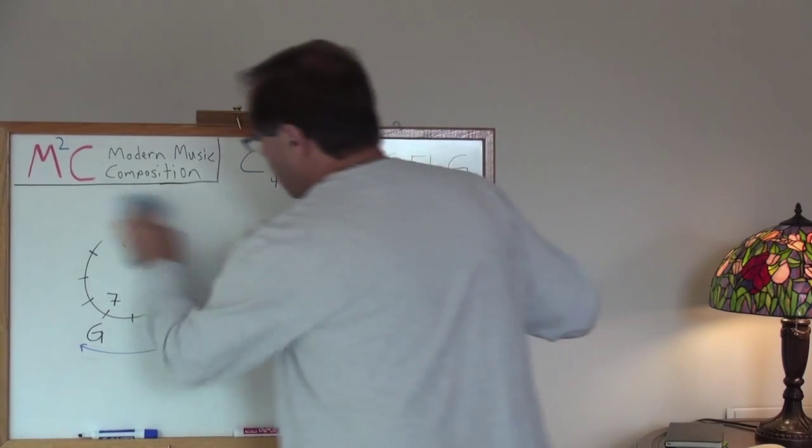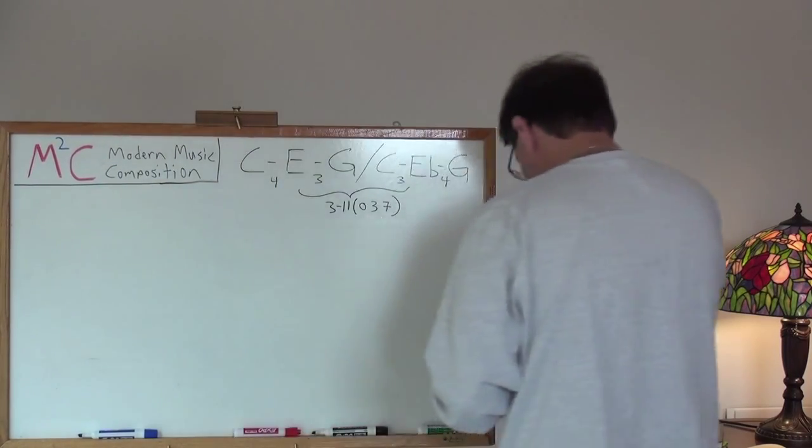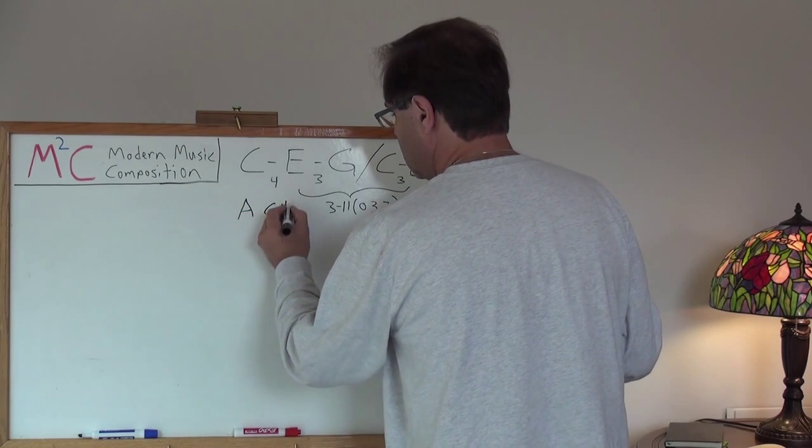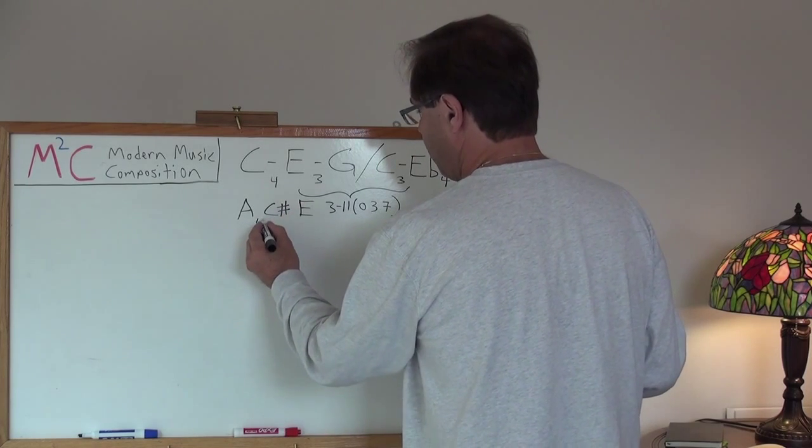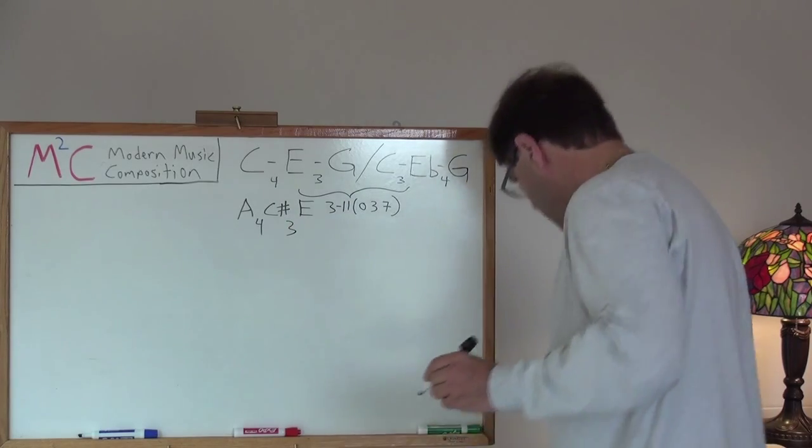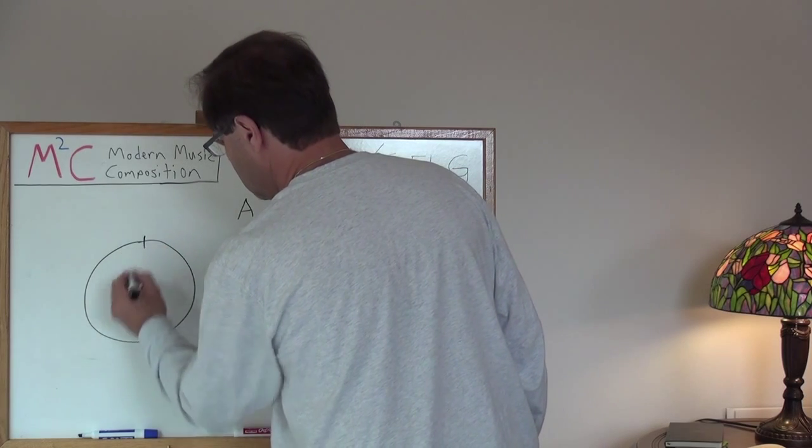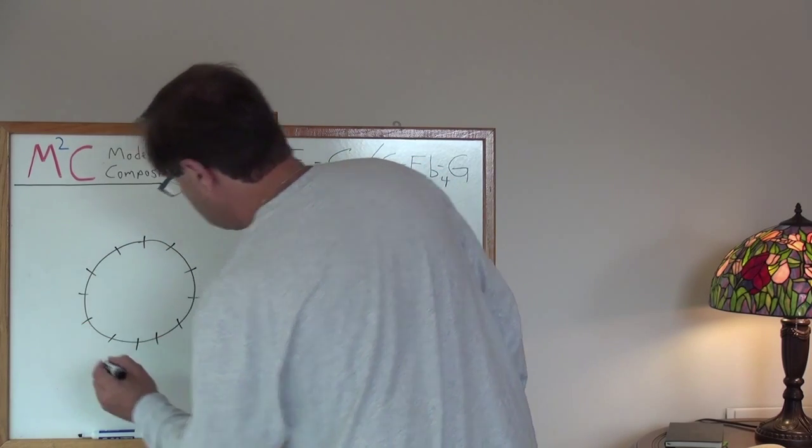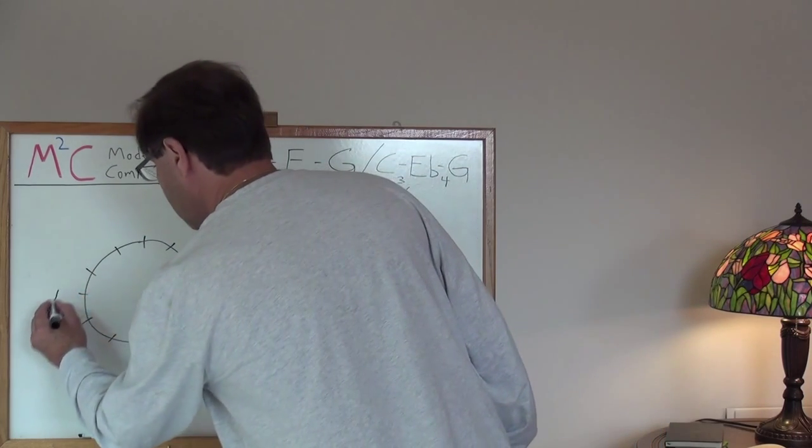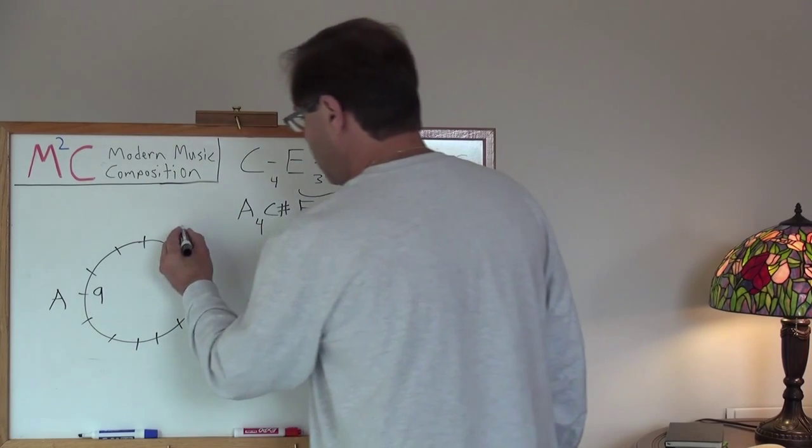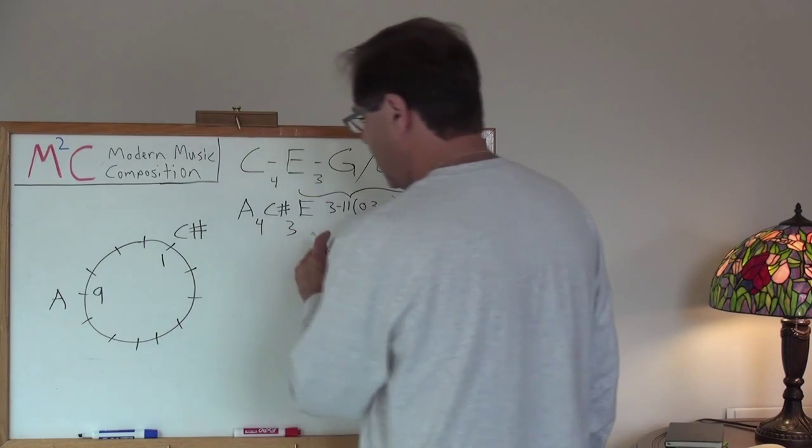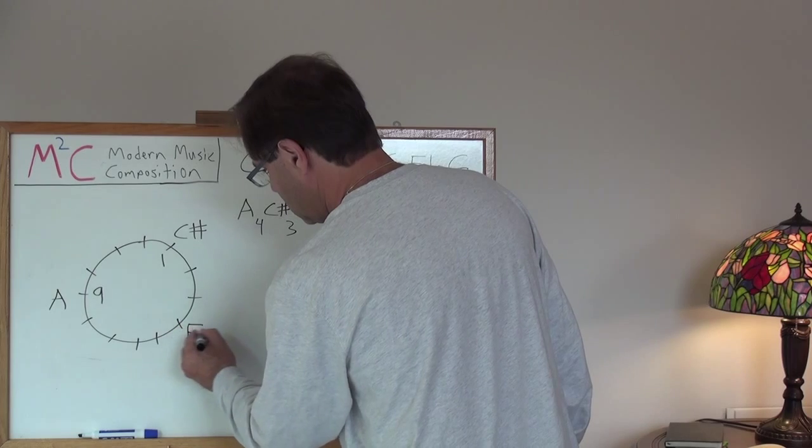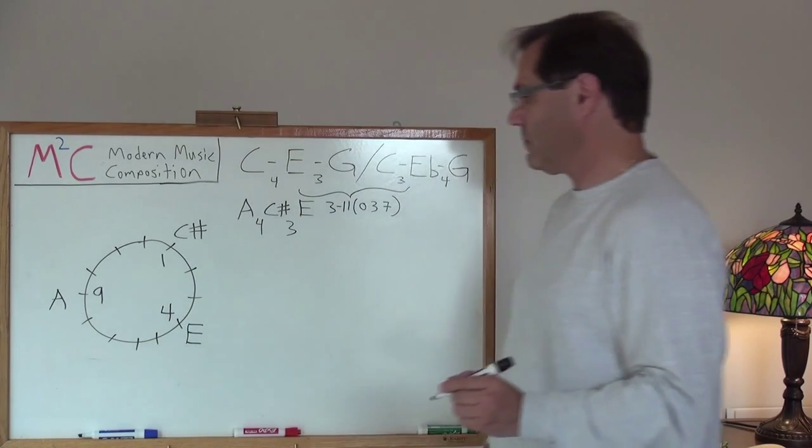Let's go through one more example. Let's choose, randomly choose one, I don't know, A major. A, C sharp, E. So between A and C sharp, we have four semitones. Between C sharp and E, we have three semitones. Right? Let's write that out. Our A is over here at 9. Our C sharp is right here at 1. And our E is at 4. So we've got 1, 4, 9.